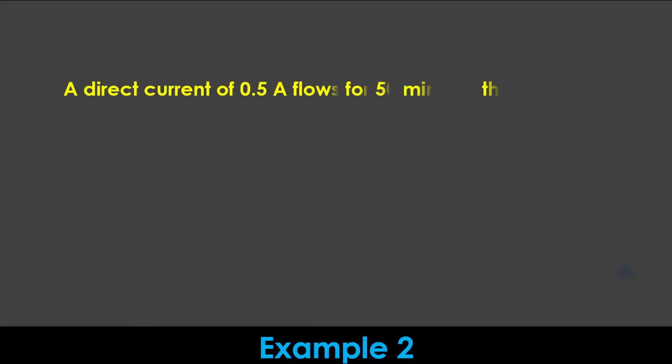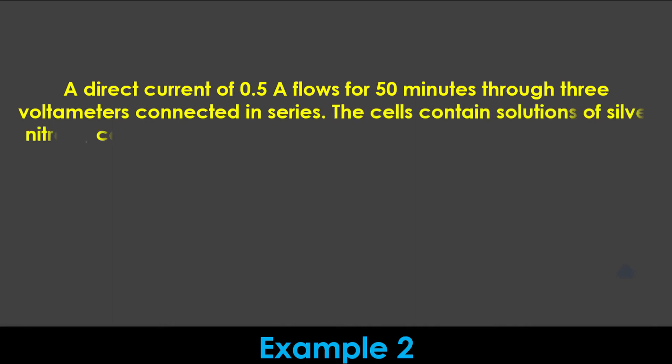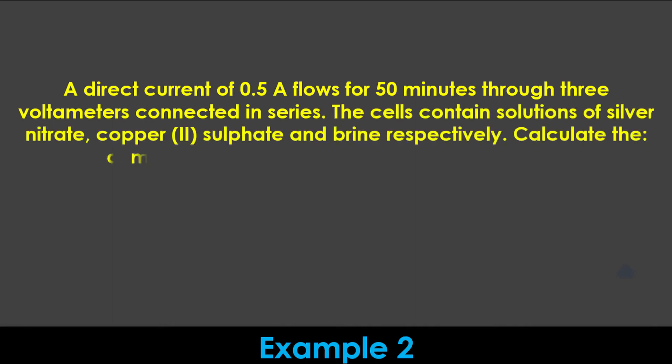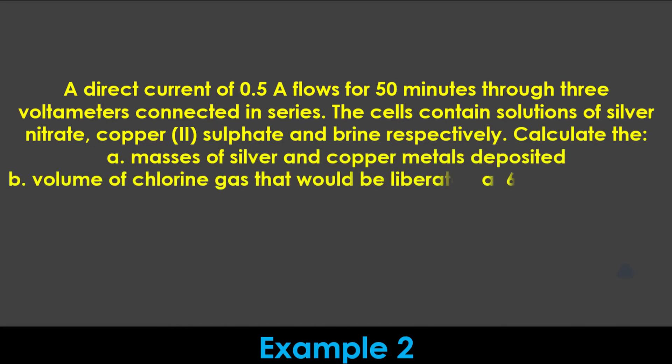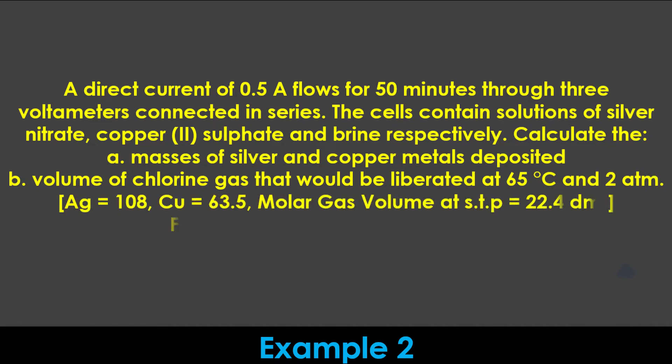Next is Example 2. A direct current of 0.5 A flows for 15 minutes through three voltameters connected in series. The cells contain solutions of silver nitrate, copper(II) sulfate, and brine respectively. Calculate: (A) the masses of silver and copper metals deposited, and (B) the volume of chlorine gas that will be liberated at 65°C and 2 atmospheric pressure. Take the relative atomic masses of silver and copper to be 108 and 63.5 respectively, the molar gas volume at STP as 22.4 dm³, and Faraday's constant as 96,500 coulombs per mole.